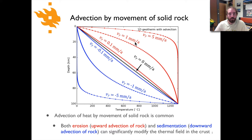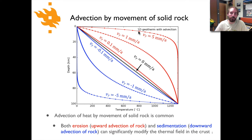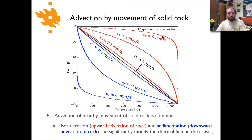If we consider positive values for the advection velocity, temperatures are slightly warmer at 0.1 millimeters per year, significantly warmer at one millimeter per year, and increase quite significantly at five millimeters per year — such that even in the upper 10 kilometers of the crust, you can hit temperatures of around a thousand degrees with this particular solution and boundary conditions.